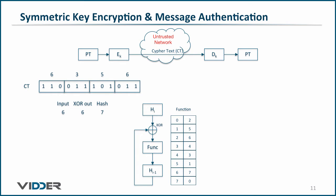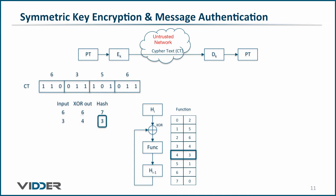The next block is 3, and here are the results we will see, where 3 is the input to our table. 3 XOR with 7 yields 4, which applied to our function yields 3, and so on for the next block, and the next block, making our final output 5.